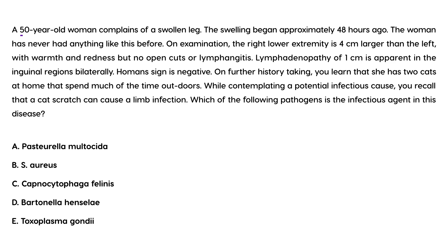Now let's take a look at a couple of clinical vignettes. A 50-year-old woman comes in complaining of a swollen leg. Swelling began approximately 48 hours ago. On exam, the right lower extremity is four centimeters larger than the left, with warmth and redness but no open cuts or lymphangitis. Lymphadenopathy of one centimeter is apparent in the inguinal regions bilaterally. Homans' sign is negative.